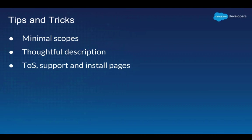Tips for getting your app into the directory: there is a review process at api.slack.com. Ask for minimal OAuth scopes — requesting too many makes users think your app is risky. Be thoughtful with your description, check for typos, and make sure you have terms of service, a support page, and an install page, as users find these genuinely useful.